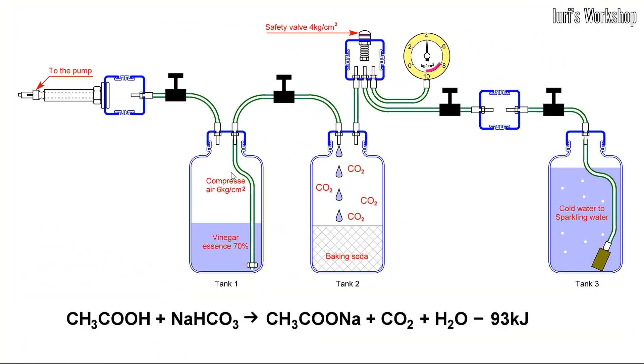This reactor works in the following way. From tank number 1, acetic essence under compressed air pressure is fed into tank number 2, which contains baking soda. As a result of the chemical reaction between acetic acid and baking soda, carbon dioxide is released.